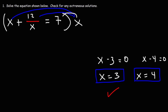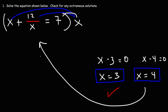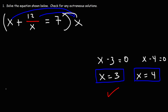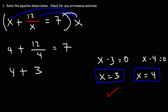Now let's check the second solution, x equals 4. We have 4 plus 12 over 4 equals 7. 12 divided by 4 is 3, and 4 plus 3 is 7. So in this example both solutions work, and we don't have any extraneous solutions for this problem.